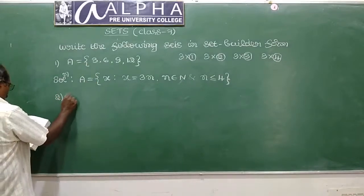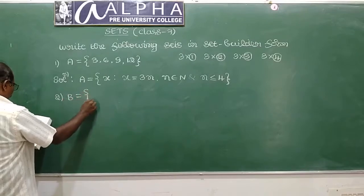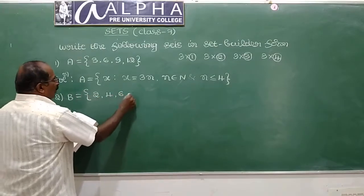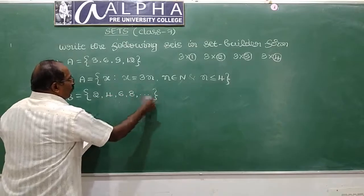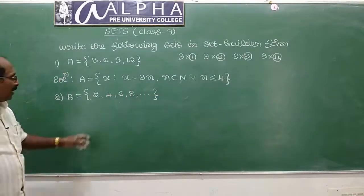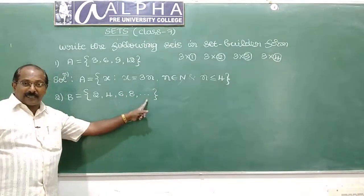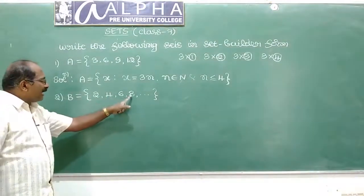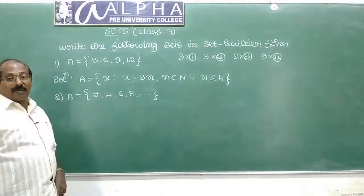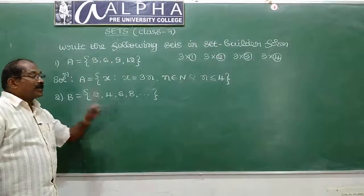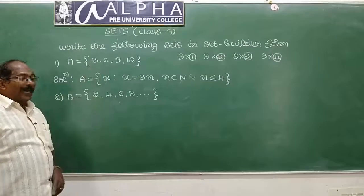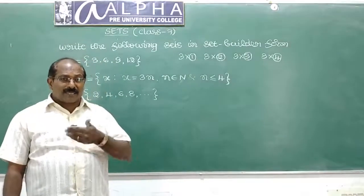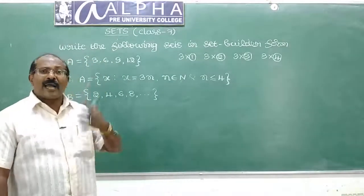Next question: B is equal to {2, 4, 6, 8, ...}. Clearly the given set is an infinite set. Observing the elements: 2, 4, 6, 8 — all are divisible by 2, and they are positive multiples of 2. Multiples of 2 include 0, plus or minus 2, plus or minus 4, plus or minus 6, plus or minus 8, plus or minus 10, and so on.